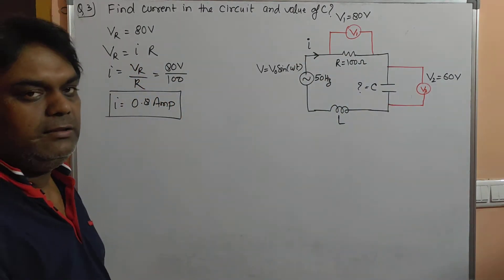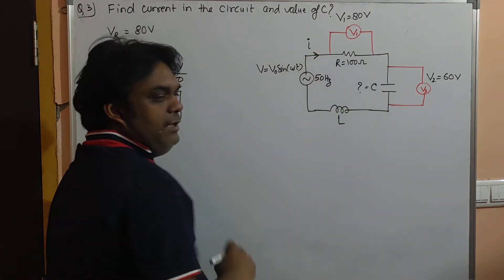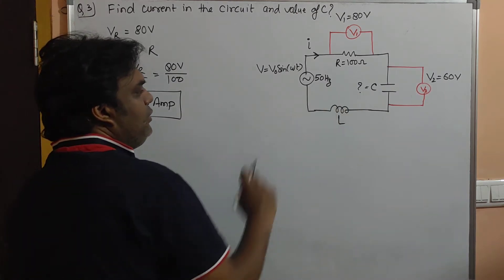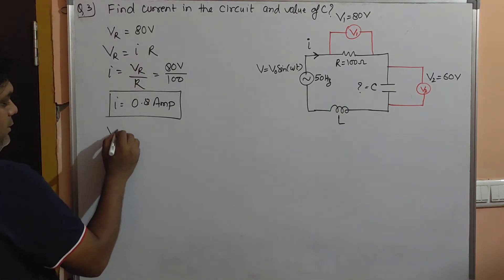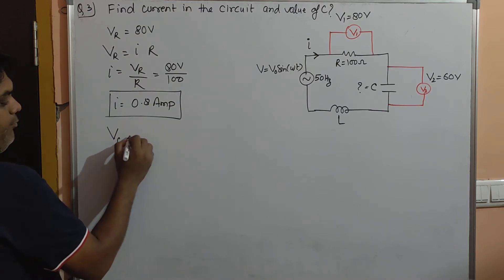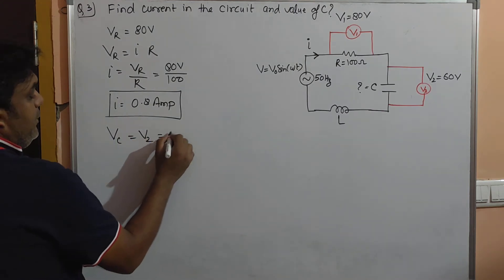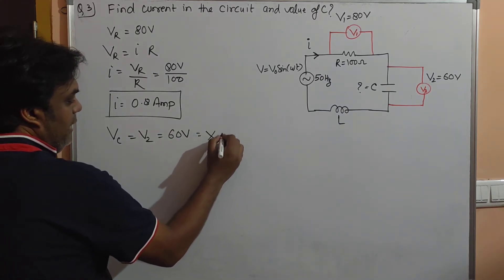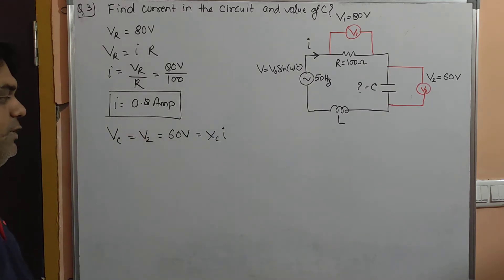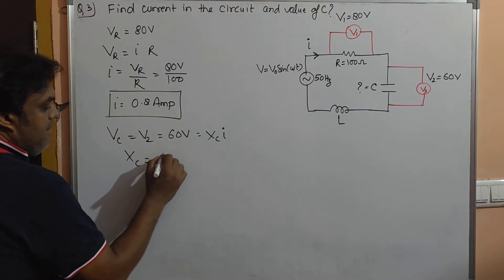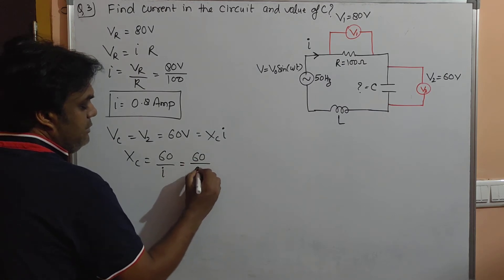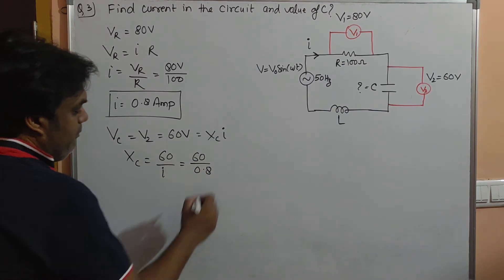Now we need to find out the value of C. As Vc equals V2 from the diagram, which is equal to 60 volts, this equals Xc into I. So from here, Xc equals 60 by I, that is 60 upon 0.8, which comes out to be 600 by 8. This is the value of Xc.